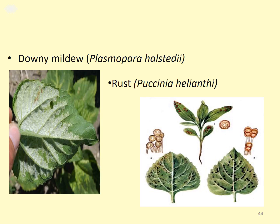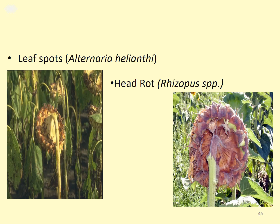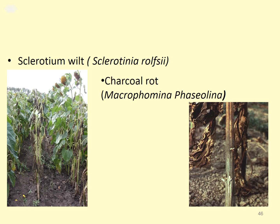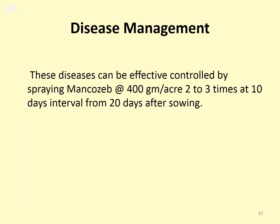Rust spores can be seen clearly in photographs. Leaf spot is caused by Alternaria helianthi; by the collision and joining of spots together, it can make havoc in sunflower fields. Head Rot, where the head portion is completely damaged, is caused by Rhizopus species. Sclerotium Wilt and Charcoal Rot are also shown. Management: spray Mancozeb at the rate of 400 grams per acre, two to three times at 10-day intervals from 20 days after sowing.